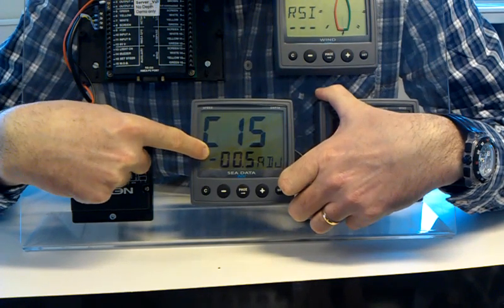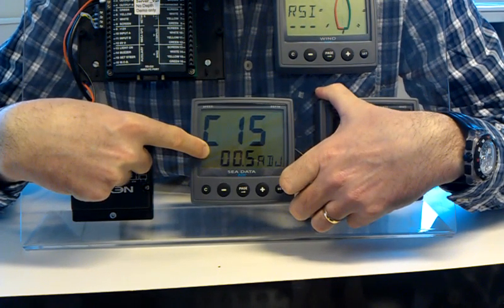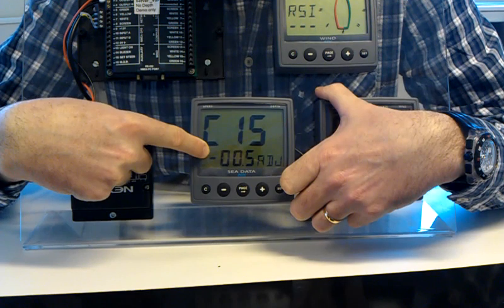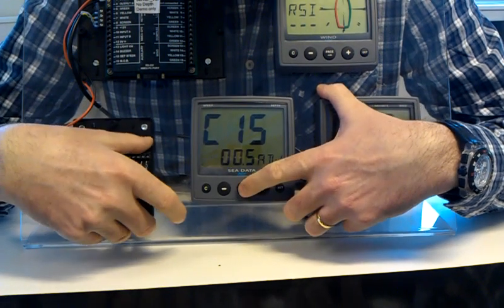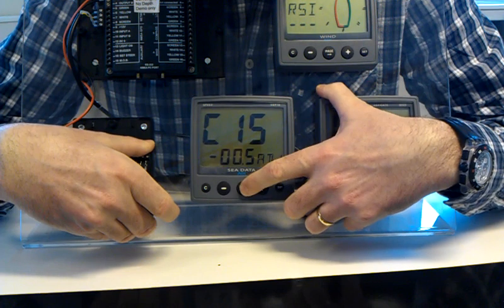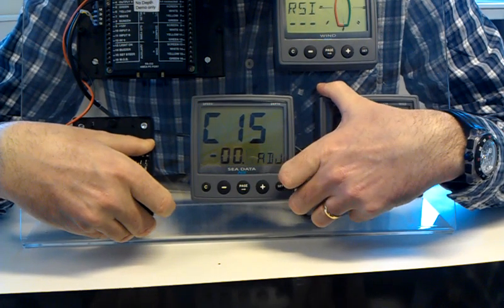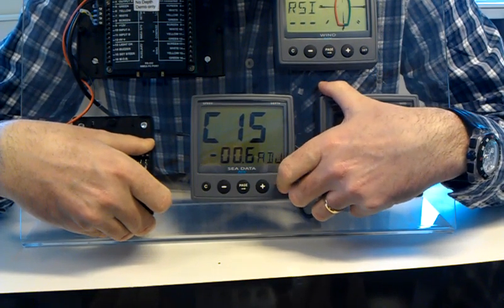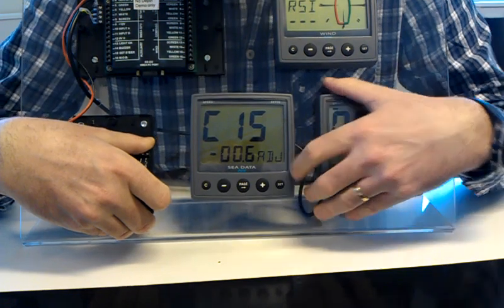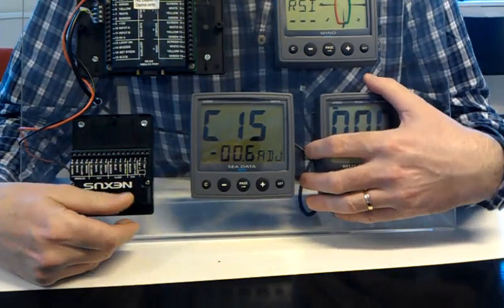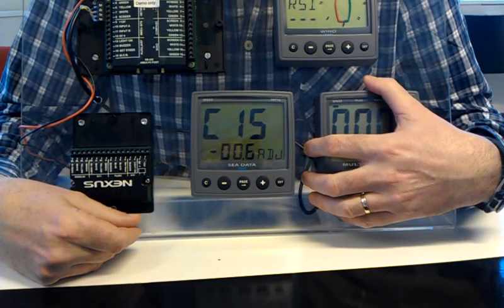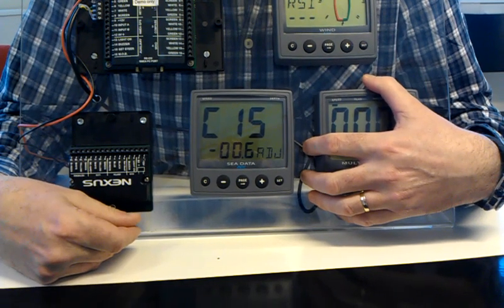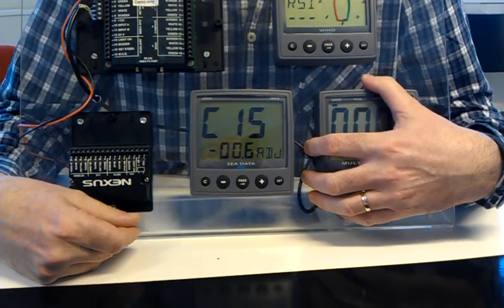And on the Good Ship Nexus, my keel is actually 60 centimeters below where the transducer is. So I'm just going to move it over to highlight the 5, and I'm going to change that to a 6, and confirm with set. So now what we've done, we're reading the depth from the bottom of the keel, where the keel is 60 centimeters below the transducer.